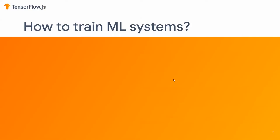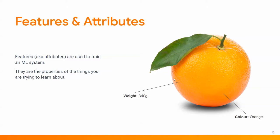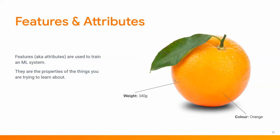How do we train machine learning systems? We need features and attributes. If we pretend to be farmers trying to classify apples and oranges, two features you might use are weight and color — easy to measure digitally. We can plot those on a 2D graph with weight on the y-axis and color on the x-axis. You can see how green apples and red apples cluster together at the bottom, and oranges, being juicy, are slightly higher on the weight axis.